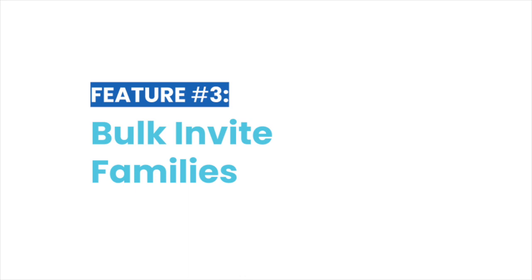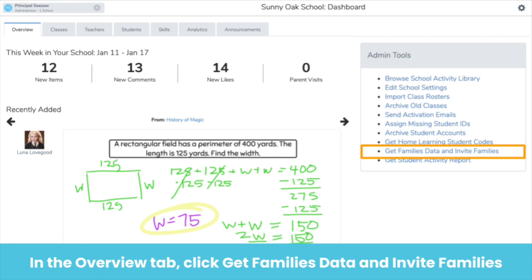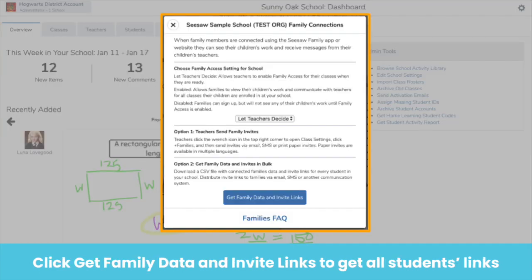Family engagement is the best predictor of student success. You can support all families to engage in their child's learning by connecting them on Seesaw. Work with your tech team to bulk invite families from the admin dashboard. To invite families, you or another Seesaw admin — potentially your tech coordinator — can click "Get Family Data and Invite Families." Once you click Get Family Data and Invite Links, you can get a CSV that shows all students, whether they have a family member connected, and their unique invite link. Send the join link to each family member using your preferred communication method — for example, you can use a mail merge app to quickly email the join link to every family member in just a few clicks. For more information on bulk invites, search "bulk invite" on help.seesaw.me.